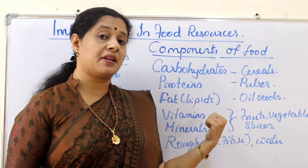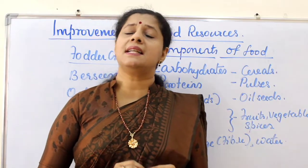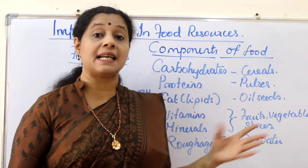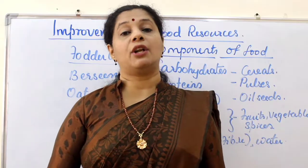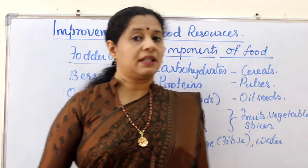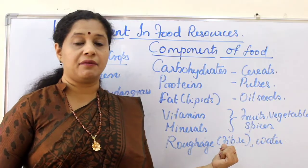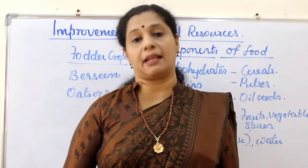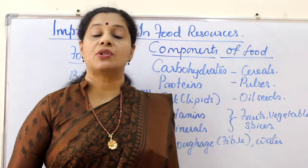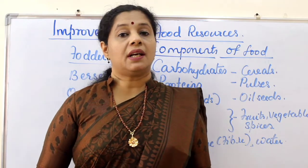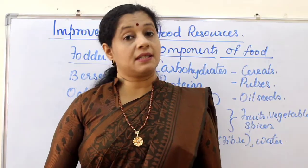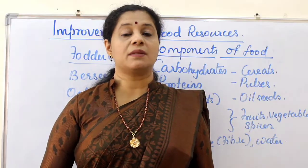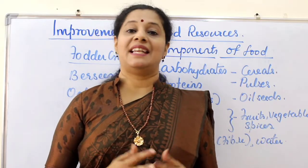Vitamins and minerals are required by our body in very small quantities but are still very important to strengthen our immune system. We should daily include fruits, vegetables, and spices in our diet to meet the requirement of vitamins and minerals. The last two components are roughage or fiber, and water. Both have no nutritional value, yet they are important. Fiber is present in most fruits and vegetables and is important for proper digestion and bowel movement. Water is a non-nutrient source, but without water nothing is possible, so we need a lot of water in our body.